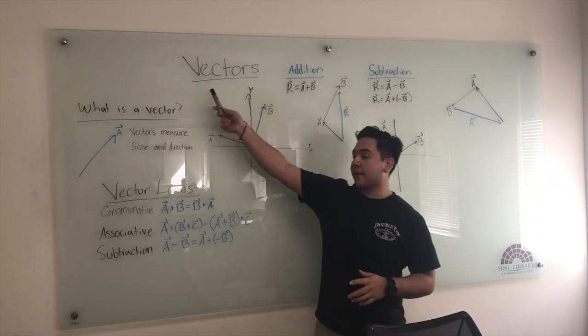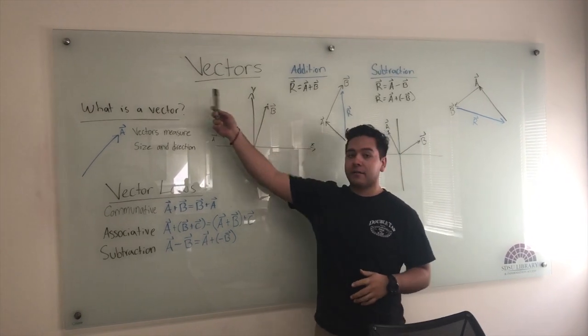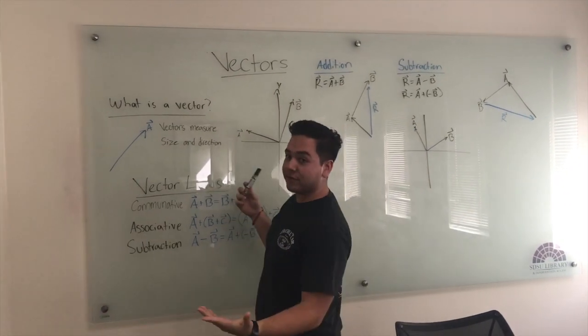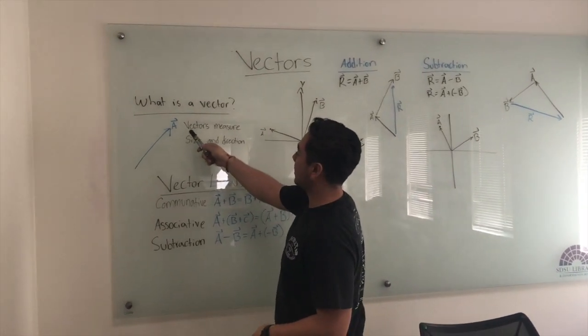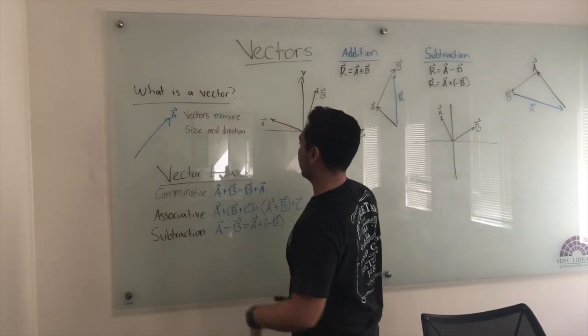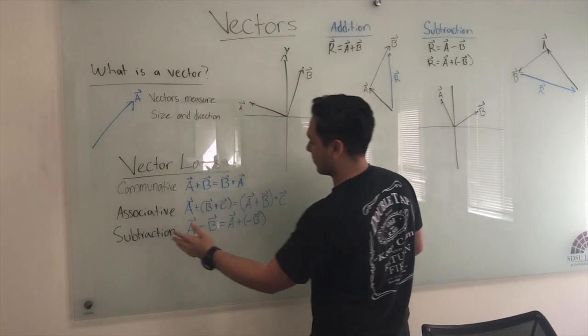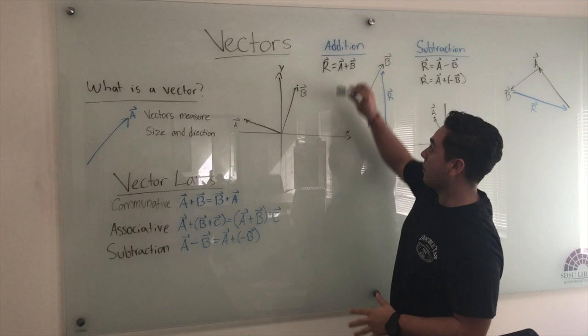Alright, so today I will show you vectors. Now you may be asking what is a vector, and a vector is something that measures size and direction. And there's vector laws: commutative, associative, subtraction, and right here we'll be adding vectors.